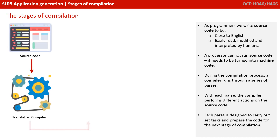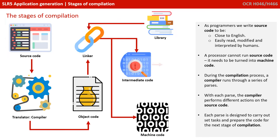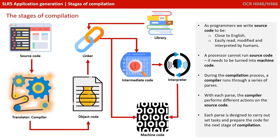As programmers we write source code, and that's close to English and it's easy to read, modify and interpret by humans. As we already know though, a processor cannot run source code — it needs to be first turned into machine code. During the compilation process, a compiler runs through a series of what are known as passes. With each pass, the compiler performs different actions on the source code. Each pass is designed to carry out set tasks and prepare the code for the next stage of compilation.